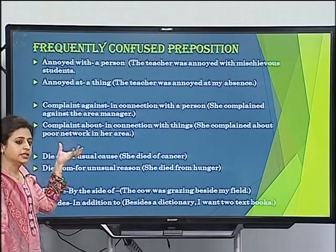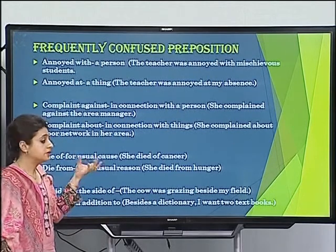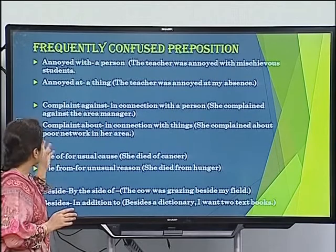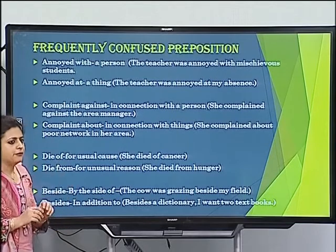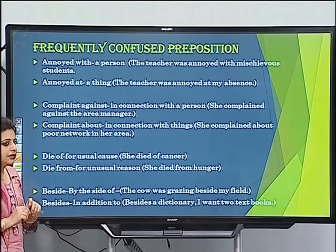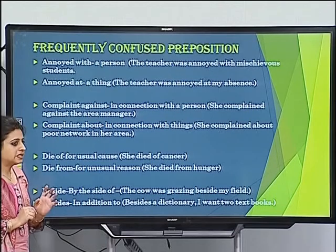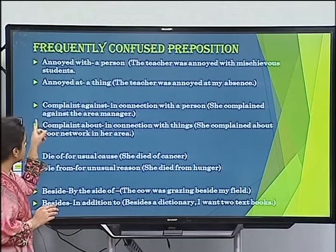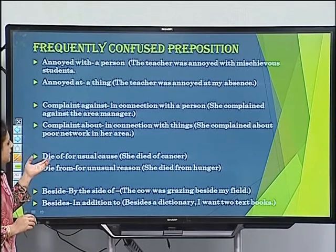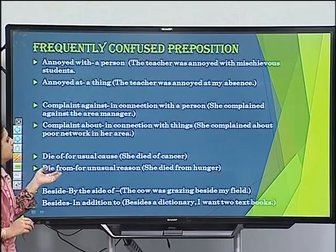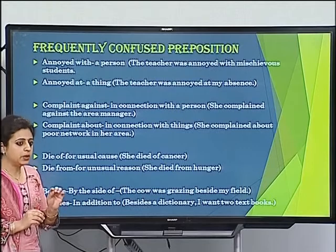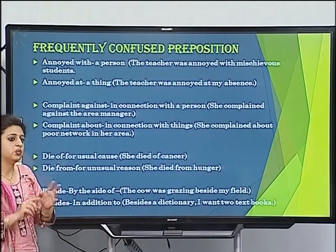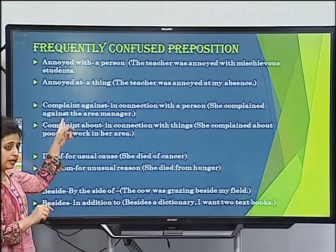These are some of the confusing prepositions. 'Annoyed with' and 'annoyed at.' When we are angry or dissatisfied with some person or a human being, we use 'annoyed with.' For example, the teacher was annoyed with mischievous students. When the teacher was annoyed with students, we use 'with.'